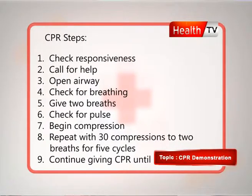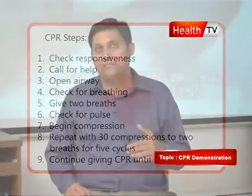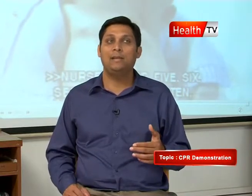The first steps were A, B, C, but in the 2010 guidelines when AHA made changes, they changed it to C, A, B. So in A, B, C: A is for airway, B is for breathing, and C is for circulation. Now they have changed it to C, A, B — so circulation first, then airway, and then breathing at the end. They have also added D, which is an important part — D is for defibrillation. D can come at any time whenever it is available.